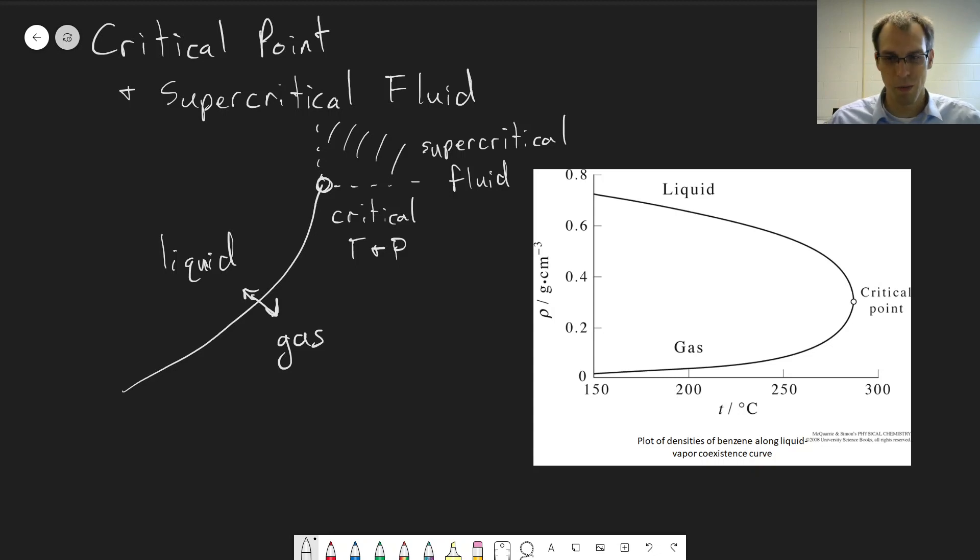To show what happens as we approach this point, this is densities of benzene here on the right. We've plotted along two different curves together. The top curve is the density of liquid, which is high. A liquid is more dense than a gas, and on the bottom is the gas.